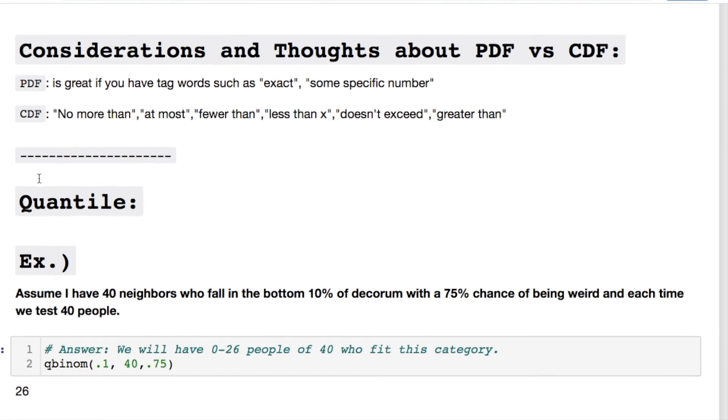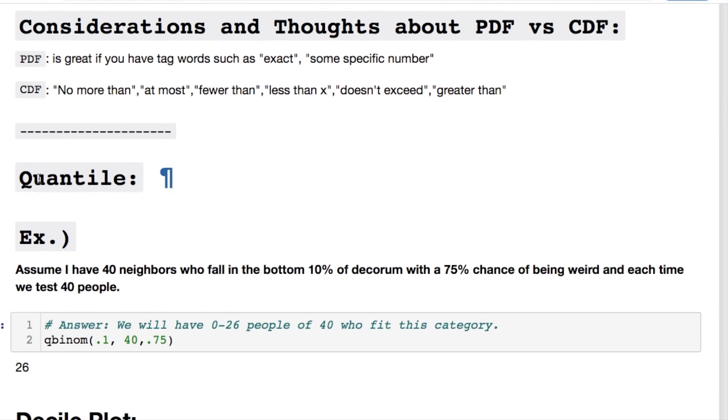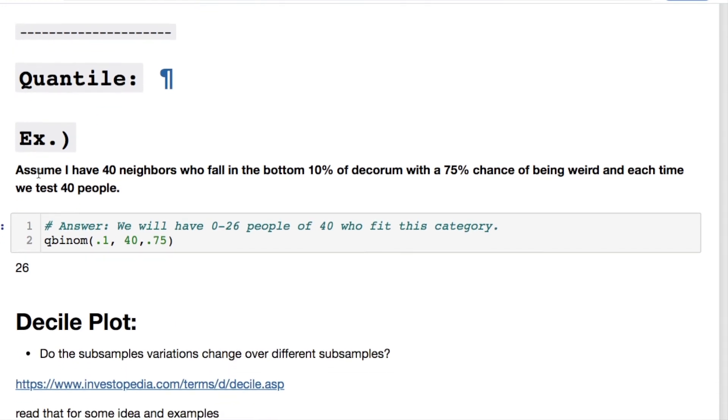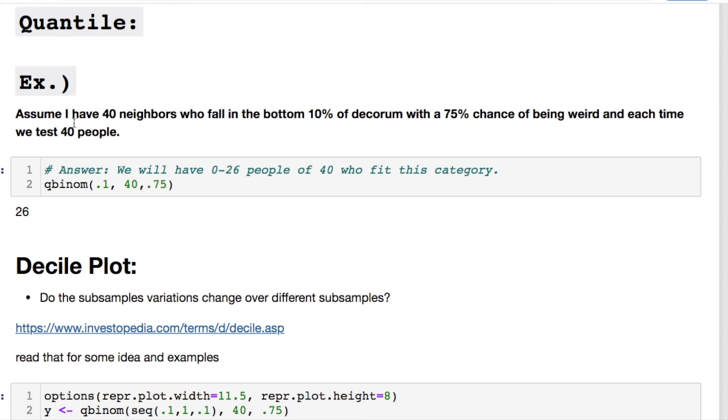But let's get into some considerations. The PDF is great if you have tag words such as exact, some, or some specific number. And then CDF has tag words like no more than, at most, fewer than, less than, etc. We have a quantile that we can use and I'm not going to give an expression here because you're returning an actual number, a predicted number.